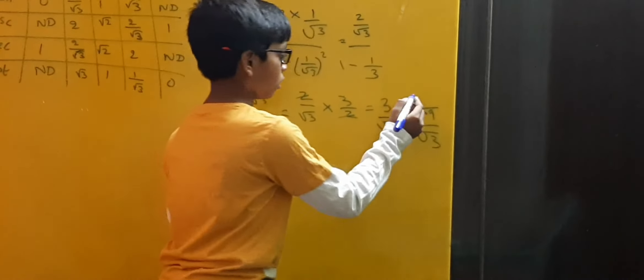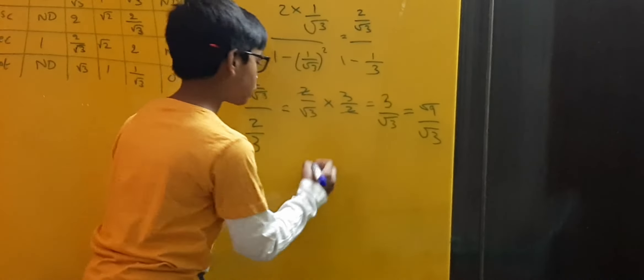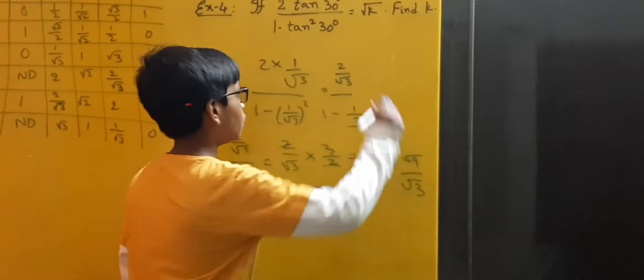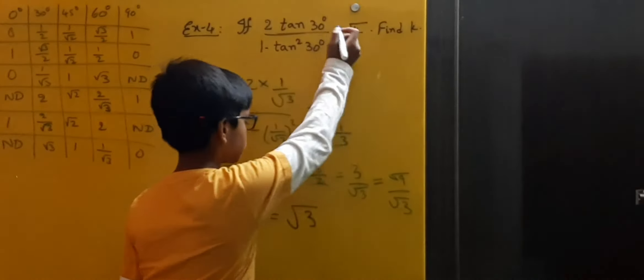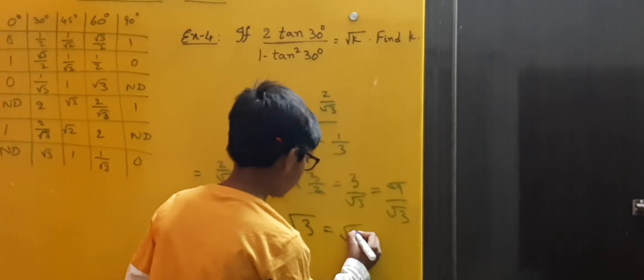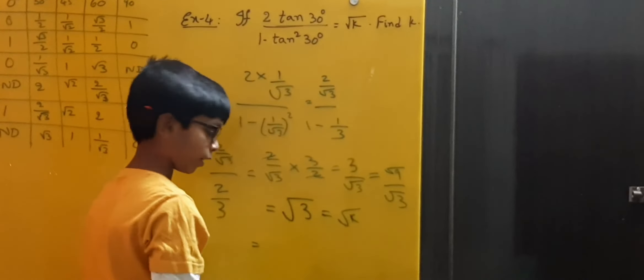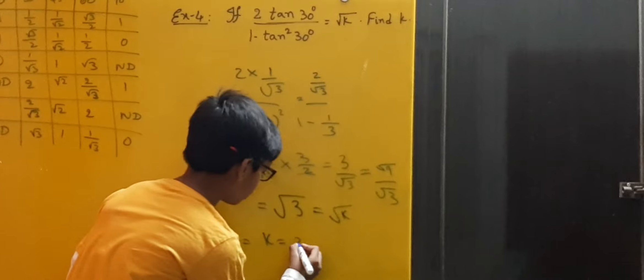Here we know that 9 by 3 is 3, so we write root 3. Root 3. Here this value is assumed as root k, so root 3 is equal to root k. Then k is equal to 3.